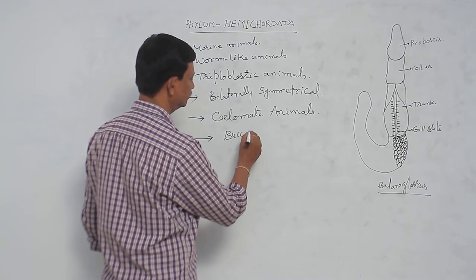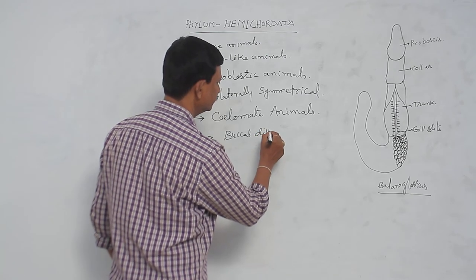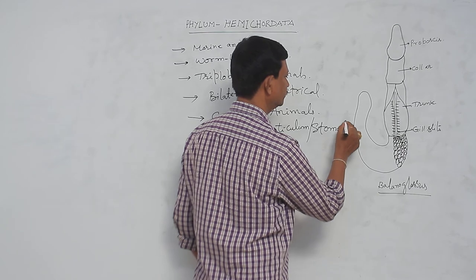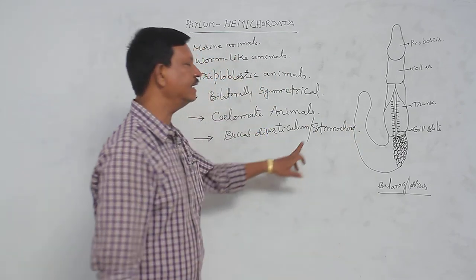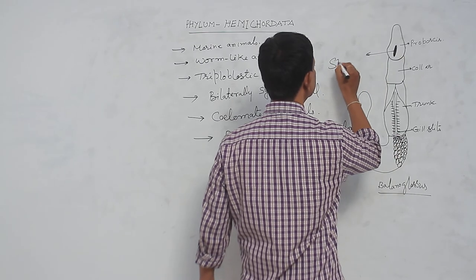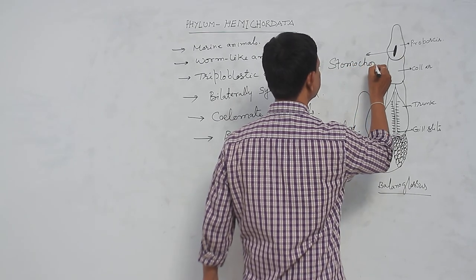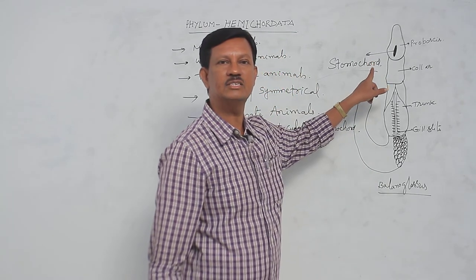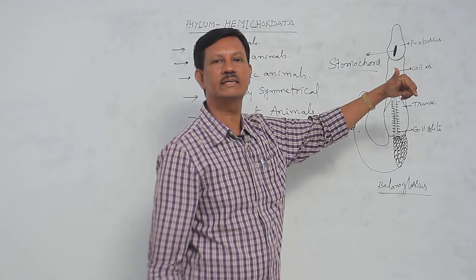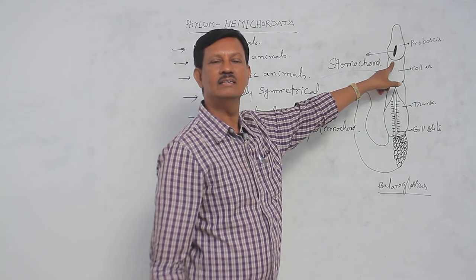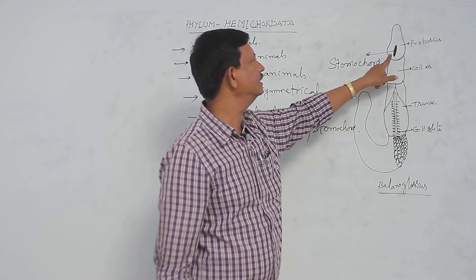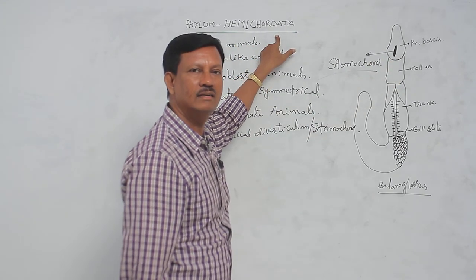The buccal diverticulum is a rod-like structure present at the anterior end of the body in the proboscis region, known as the stomochord. Previously, scientists believed it was a notochord, which is why hemichordates were included in the Chordata. However, recent investigations reveal that it does not contain true notochord characters — it is of doubtful nature — which is why it was removed from Chordata and placed in non-chordata.